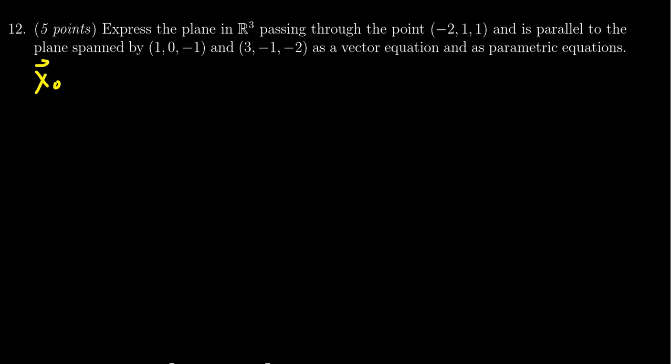We can see that we need a particular point on the plane that's given to us. So X₀ is going to be the vector (-2, 1, 1). We need to have two spanning vectors which are told, thus, that because our plane is parallel to these ones, we get that U is going to equal (1, 0, -1) and V is equal to (3, -1, -2).